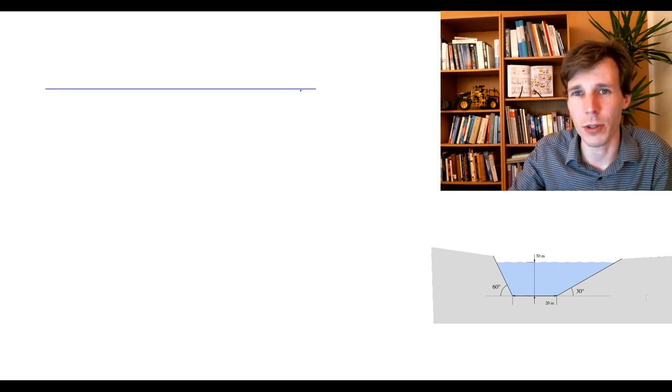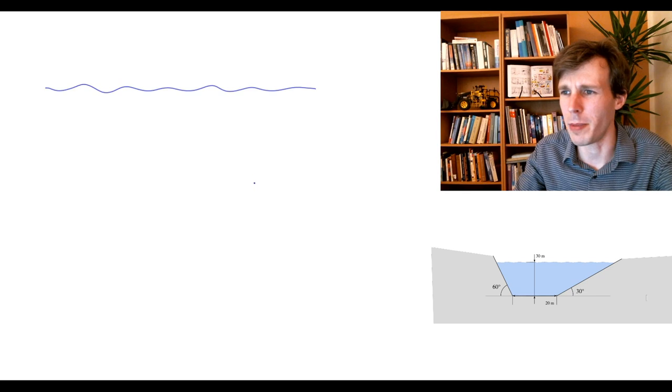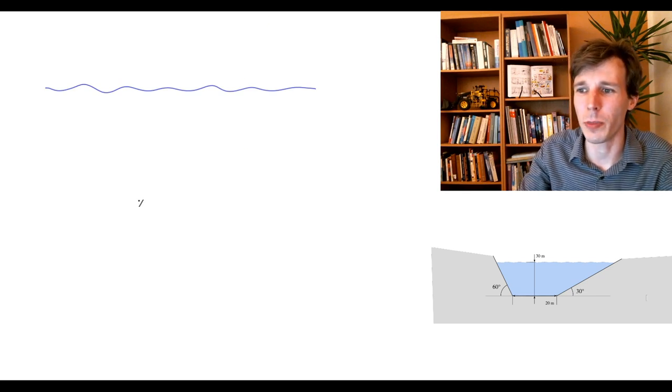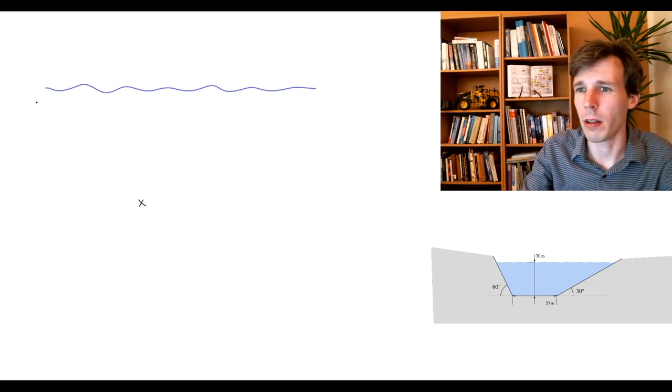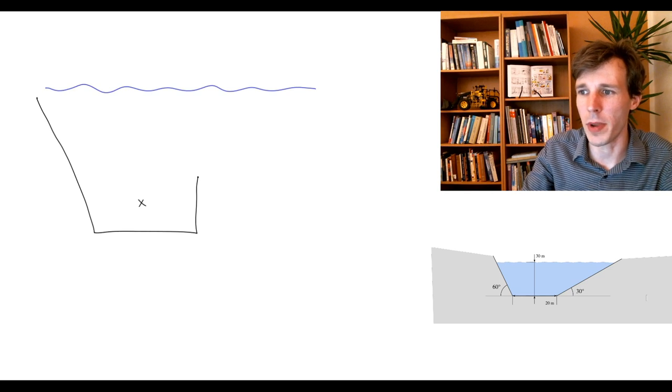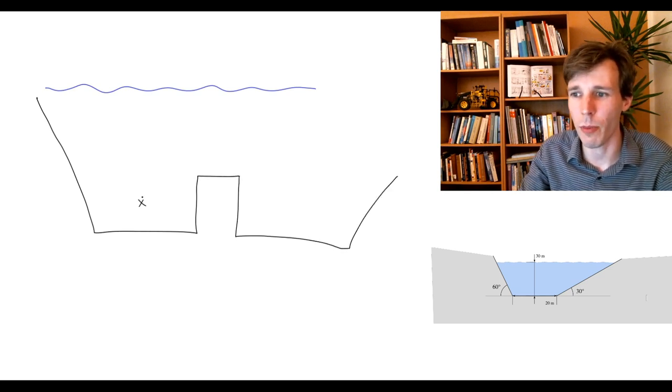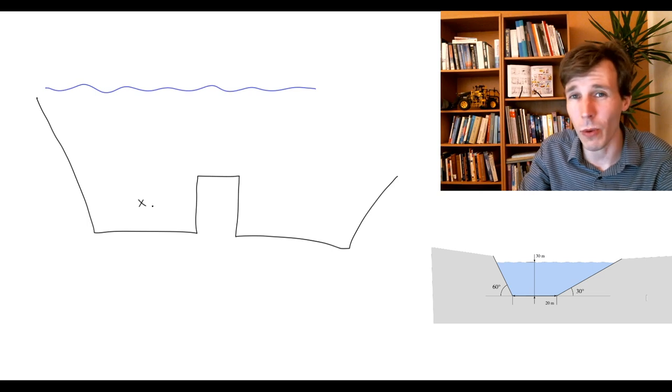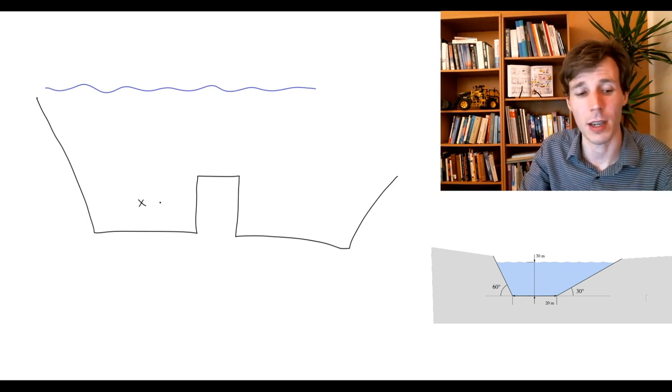Let's say you have the water surface over here. Let me keep it wavy like this. And you're at this point here. Just to be clear, the side walls that you may have on the side here do not affect the pressure at this point in any way as long as the water is static.